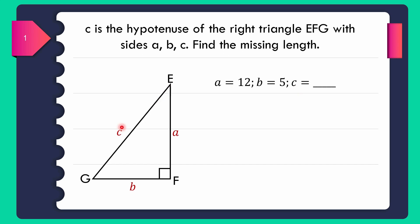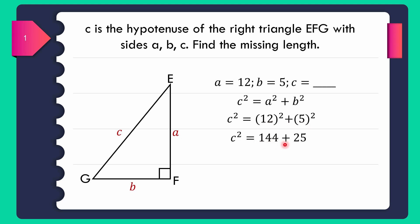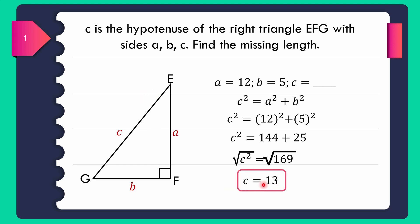For number one, C is the hypotenuse of triangle EFG. We use the formula C squared equals A squared plus B squared. Substituting: C squared equals 12 squared plus 5 squared, which equals 144 plus 25, equals 169. Taking the square root of both sides, C equals the square root of 169, which equals 13. Therefore, the length of side C is 13 units.